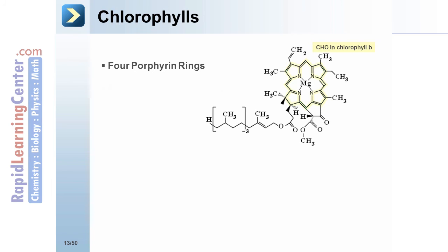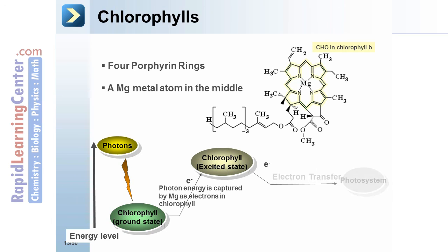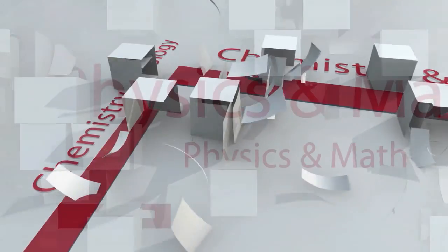Chlorophylls. Four porphyrin rings. A magnesium metal ion in the middle. Photons. Chlorophyll in the ground state. Energy level goes up with the absorption of the energy from the photons. It's captured by magnesium as electrons in chlorophyll. Chlorophyll goes to the excited state. Electron transfer to the photosystem. Chlorophyll regeneration. Regeneration is accomplished by the chlorophyll going back to the ground state.